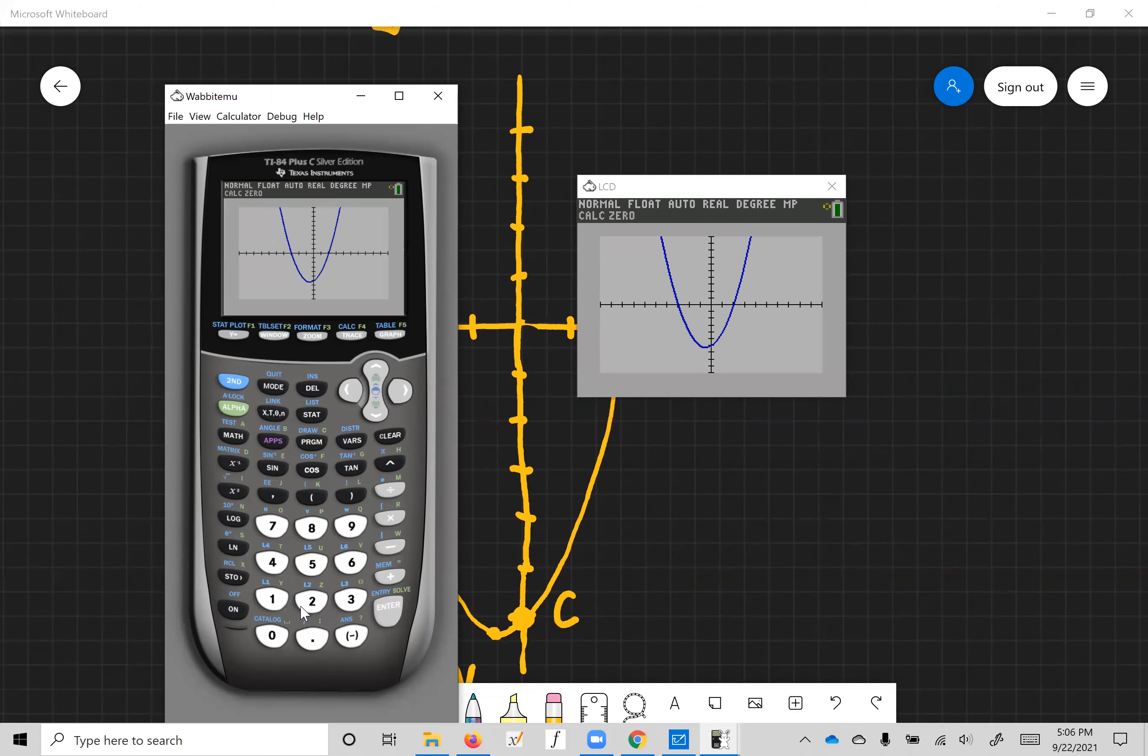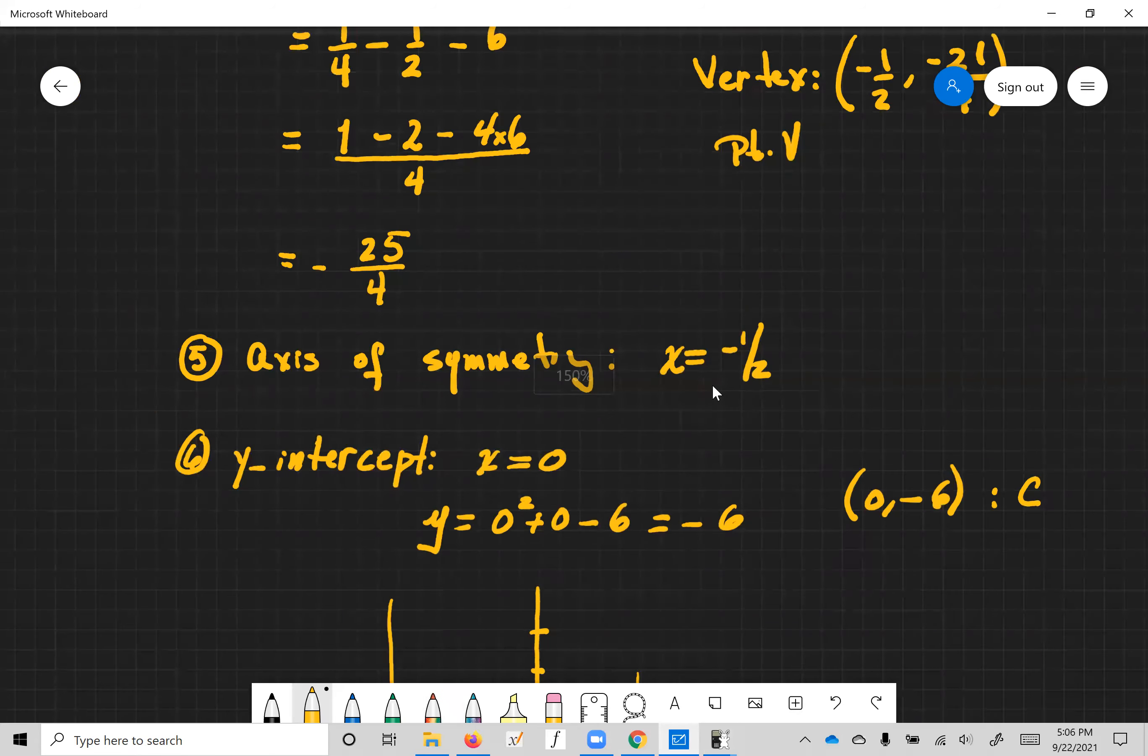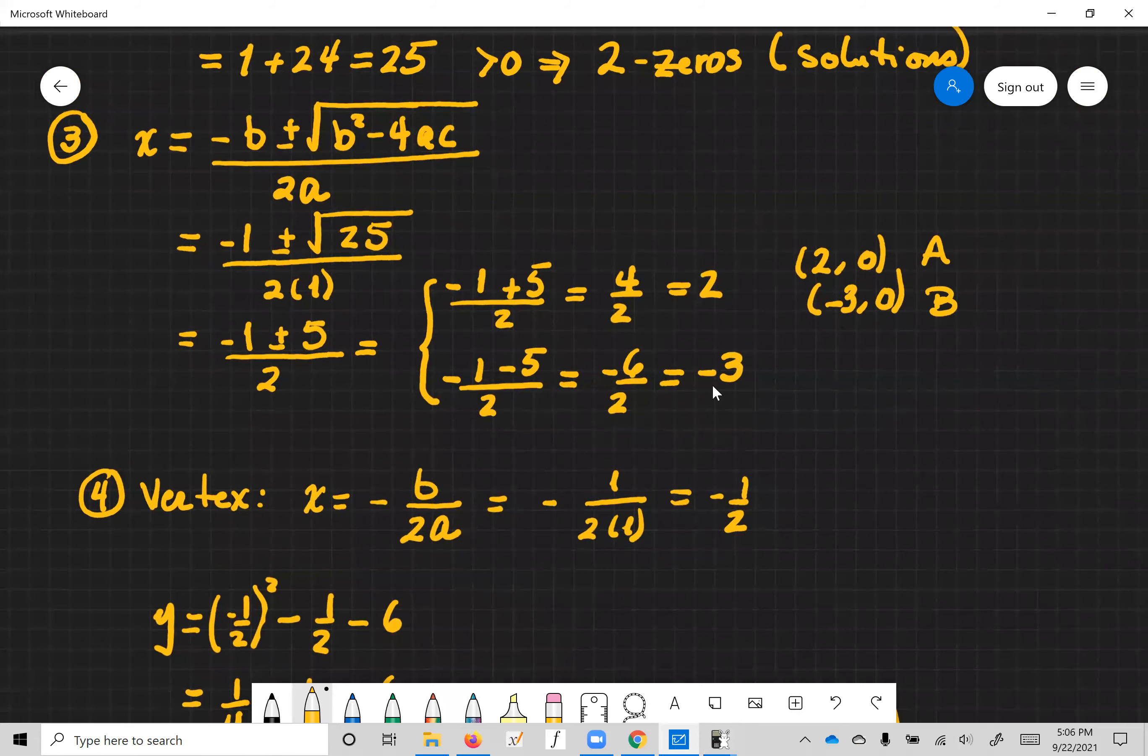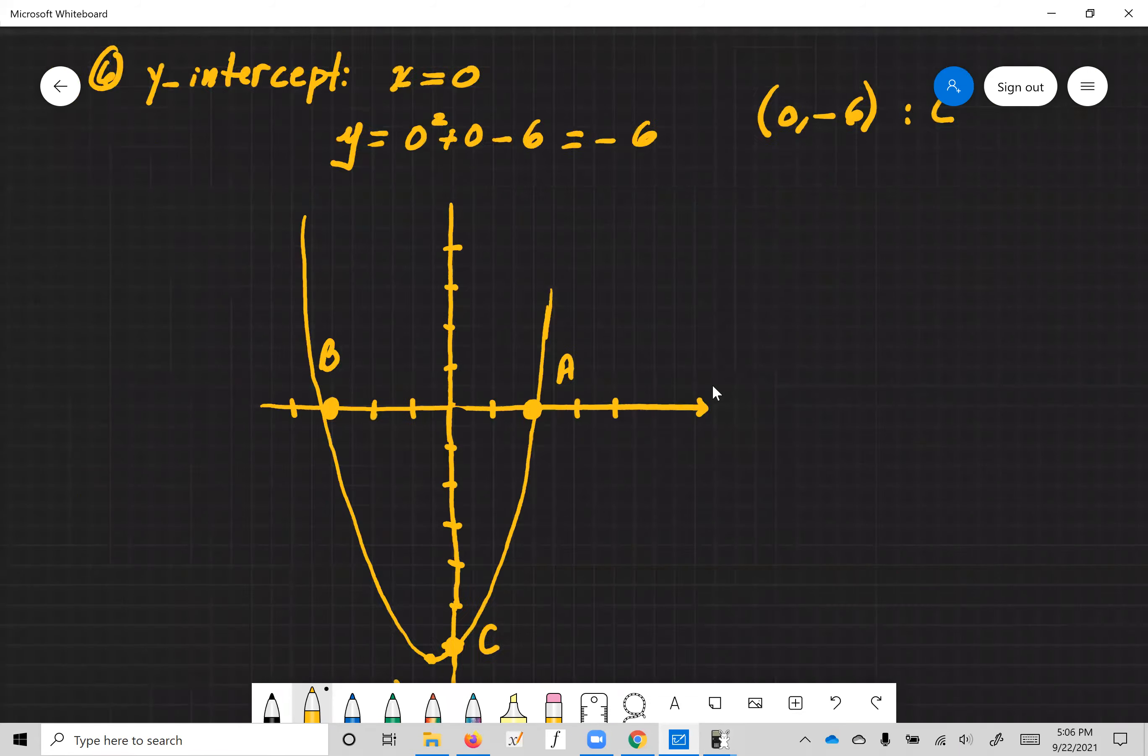Let's find the zero right here. So the calculator wants us to be to the left of the zero. So here we are to the left of the zero, left bound, see that. Hit enter. Then let's scroll over a little bit to the right of the zero. So now this pointer is to the right of the zero right here. Hit enter. Now hit enter one more time and it gave it to us: two, zero. And if we go back here, one of the zeros was two, zero. That's point A.